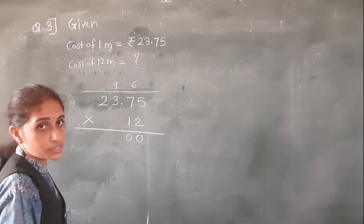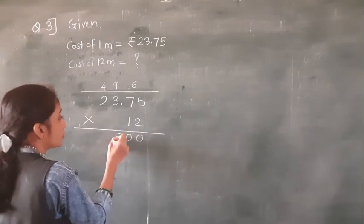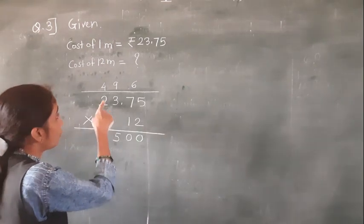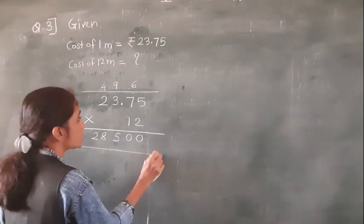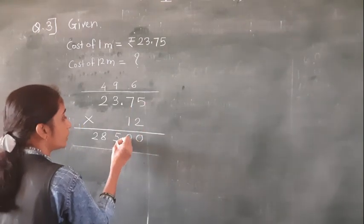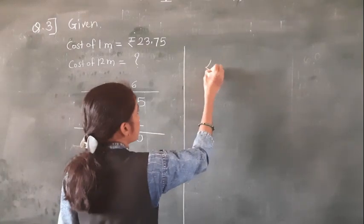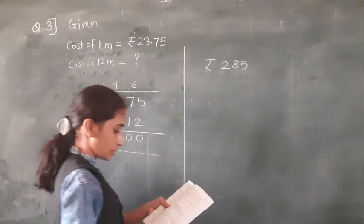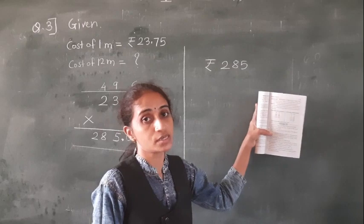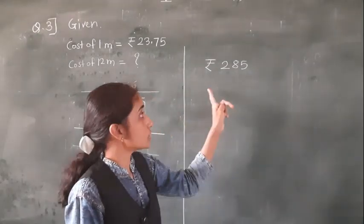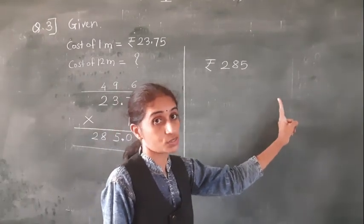3×12=36, 36+9=45. Then 2×12=24, 24+4=28. Now see here the decimal point is given — count the digits: 1, 2. Give the decimal point here. So what answer have we got? Rupees 285. The cost of 12 meters of cloth is rupees 285.